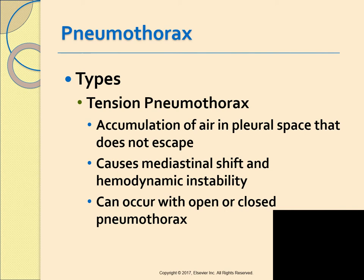An open or closed pneumothorax can become a tension pneumothorax. A tension pneumothorax occurs when air has entered the pleural space and has nowhere to escape. The continued accumulation of air compresses the lung on the affected side and puts pressure on the heart and vessels, pushing them away. The mediastinal shift toward the unaffected side compresses the good lung, further compromising oxygenation. Pressure increases, venous return decreases, and cardiac output starts to fall.